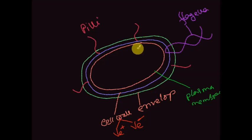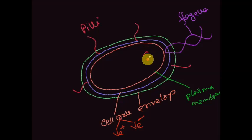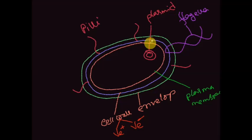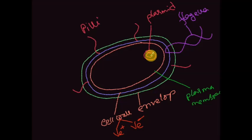Inside the bacterial cell we can see very circular types of structures called bacterial plasmid. It is extra-chromosomal DNA and its function is to help in genetic engineering and to transfer genetic materials from parents to offspring.